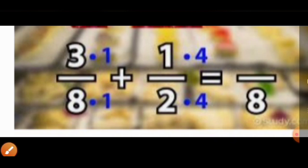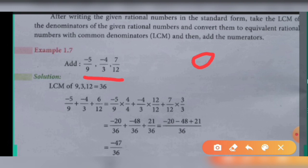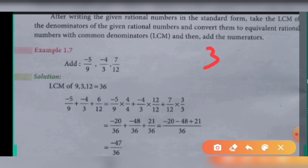Let us see one more example. Example 1.7: Add minus 5 by 9, minus 4 by 3, and 7 by 12. Solution: all the denominators are different, so we need to take the LCM of 9, 3, and 12. Using the 3 times table: 9 is 3 threes, 3 goes 1 time, and 12 is 4 times. Since 3 and 4 are not in a common table, keep as is: 3 times 3 times 4. That gives 3 threes are 9, and 9 fours are 36. So LCM = 36.